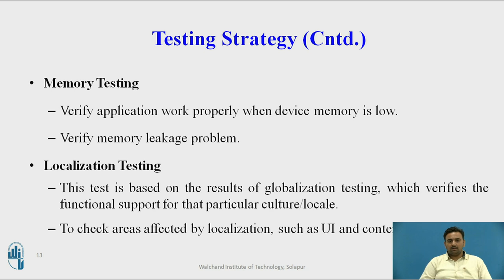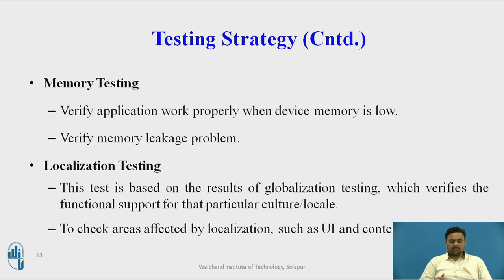The next testing is localization testing. We are using GPS systems, and the mobile device's position globally is very important information for providing services to the user. The user may demand personalized data while roaming in the world. We have to provide certain personalized data so they get better results. The app should take care of the physical position of the device, so that personalized results are provided. This is checked in localization testing.